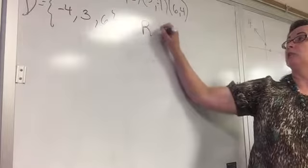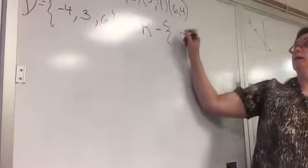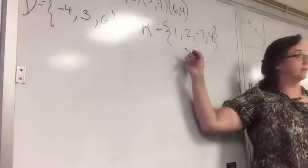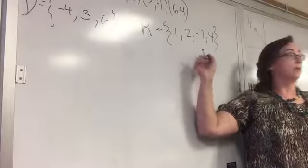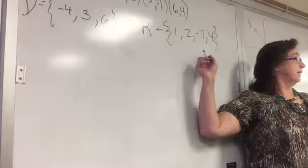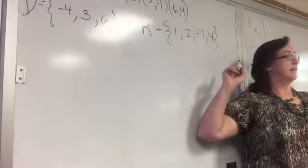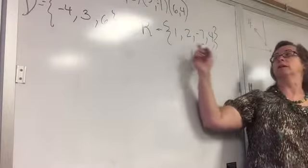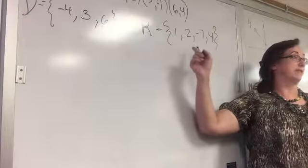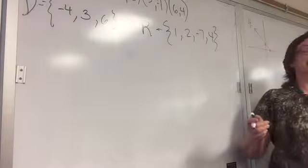What is my range? Do I have any repeats in the range? So: 1, 2, negative 7, 4. That is the way they have it in the answers. If Connect Math wants them in numerical order, you would put negative 7 in the front. But it is not a function.